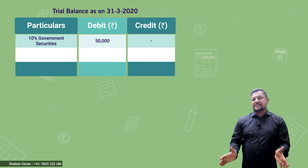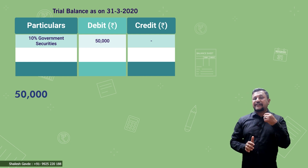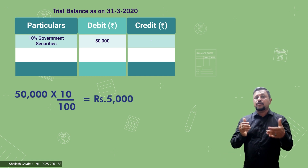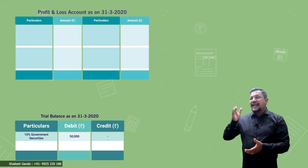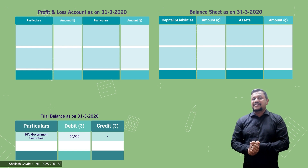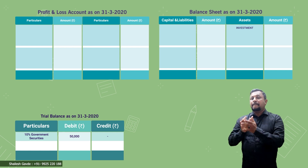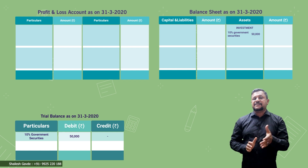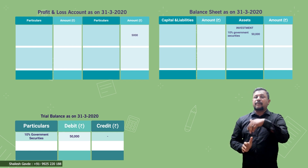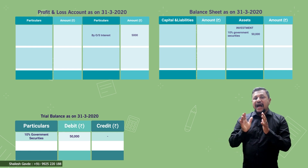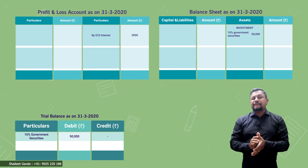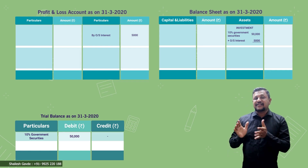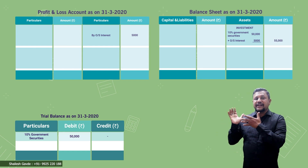This adjustment becomes: outstanding interest on government securities to be received. Calculating the interest: 50,000 × 10/100 = 5,000, and since the entire interest is yet to be received, we give two effects. First effect: credit P&L account with 5,000 as outstanding interest on government securities. Second effect: add 5,000 to investments (government securities) on the asset side of the balance sheet, making the outer column total 55,000.